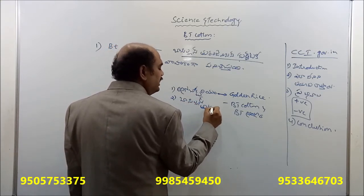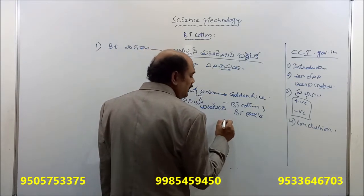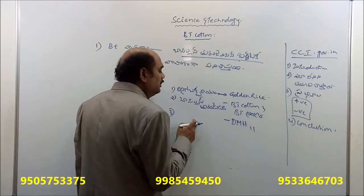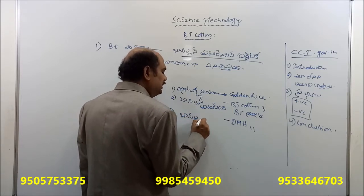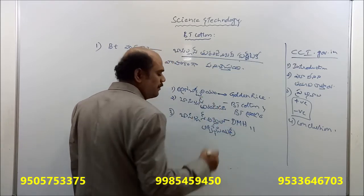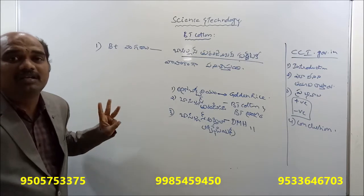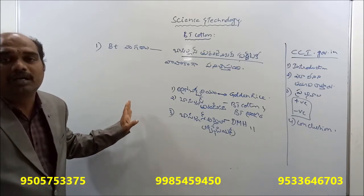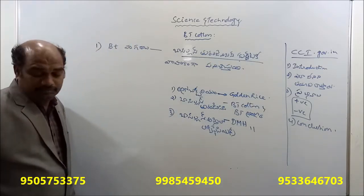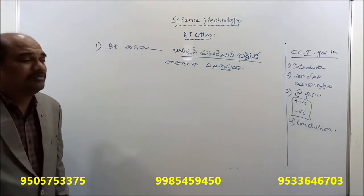Bacillus thuringiensis is the third important organism. Bt cotton, Bt brinjal, and DMH-11 are key examples. Bacillus amyloliquefaciens is another important bacterium in this context.